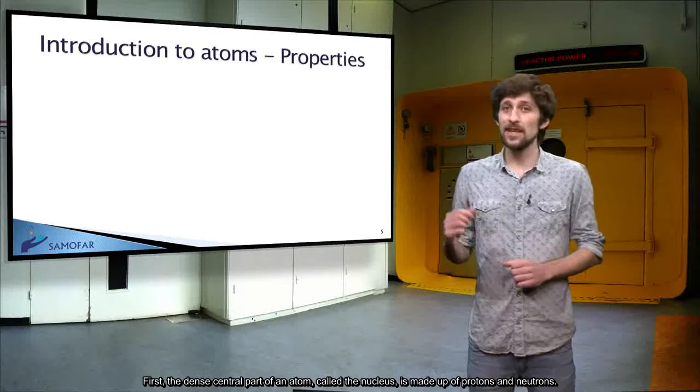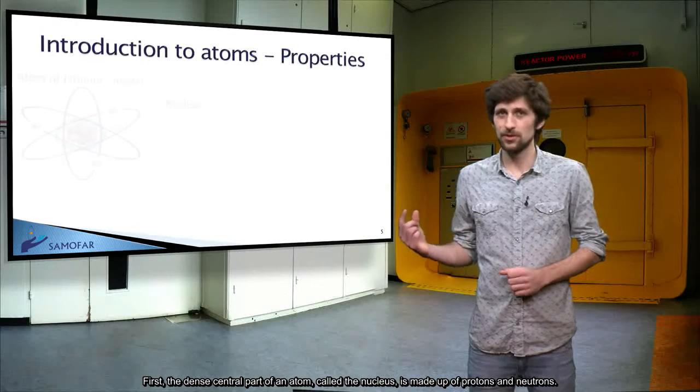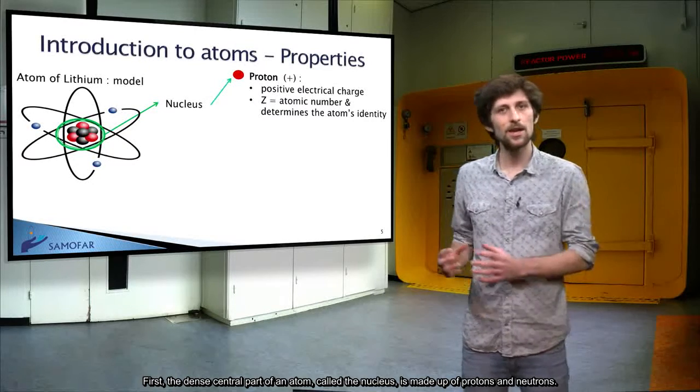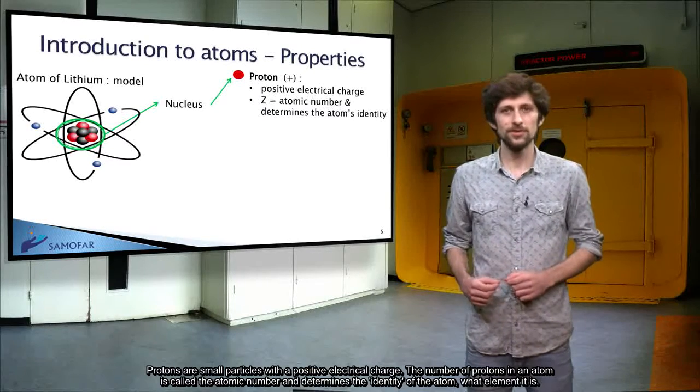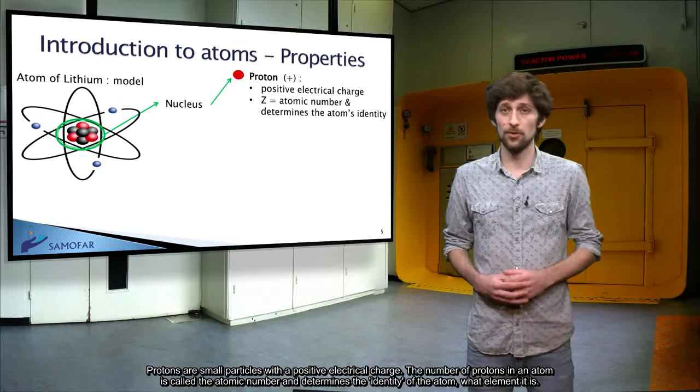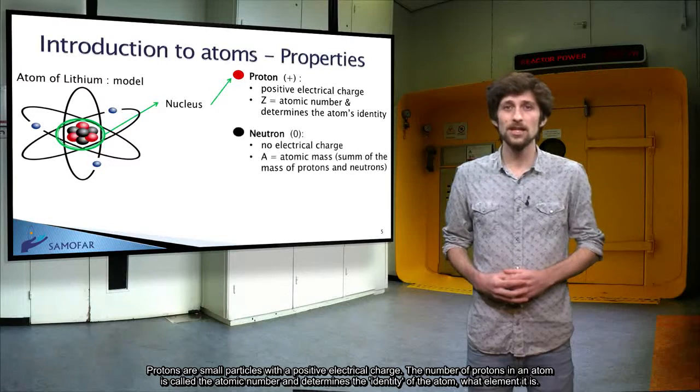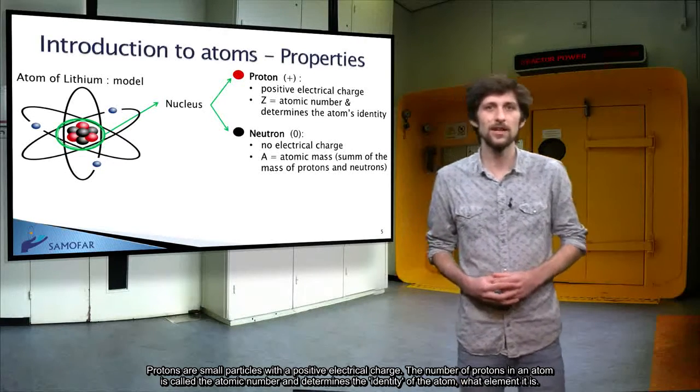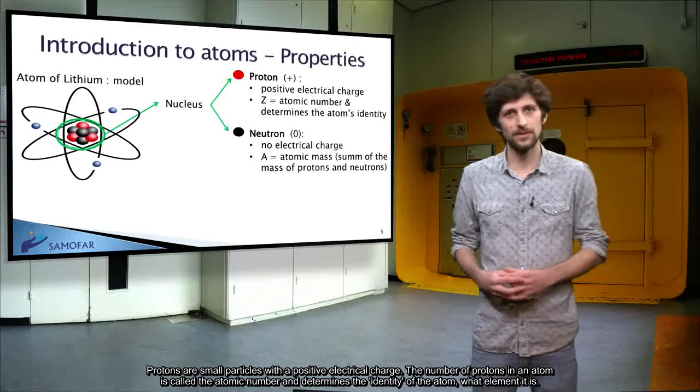First, the dense central part of an atom, called the nucleus, is made up of protons and neutrons. Protons are small particles with a positive electrical charge. The number of protons in an atom is called the atomic number, and determines the identity of the atom, what element it is.